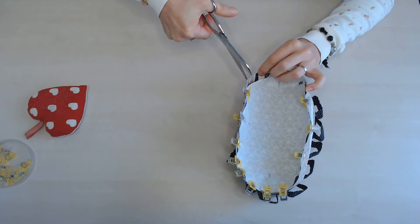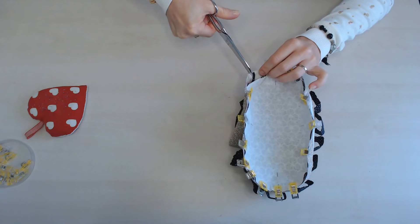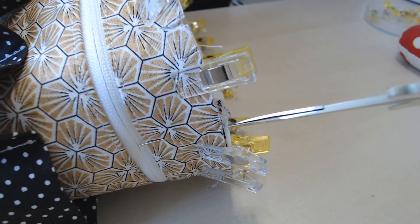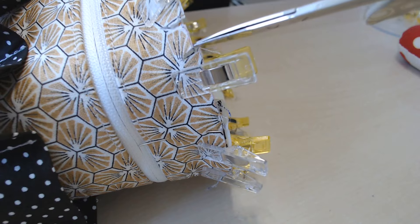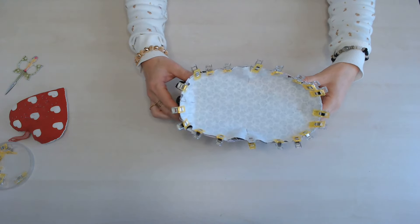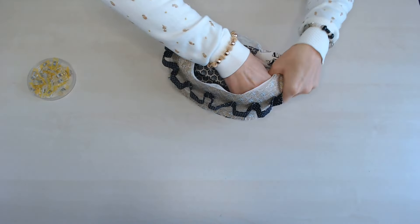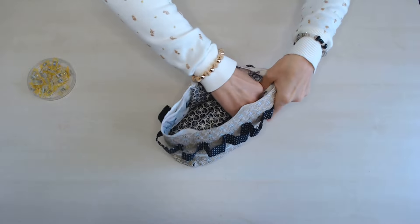On fait correspondre les épingles de côté. Pour ajuster au niveau des arrondis, il faut cranter le corps du Vanity. Et maintenant, on assemble tout le tour. Une fois assemblée, on va ouvrir.